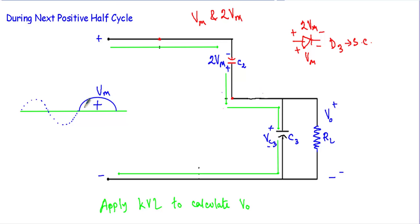During this positive half cycle, capacitor C2 discharges its voltage through capacitor C3. Therefore, the charging current flows in this direction, as indicated by the green arrows. This charging current enters at one terminal of C3 and leaves from the other, making that entry terminal positive and the exit terminal negative. The voltage across capacitor C3 is then applied across the load resistor RL.